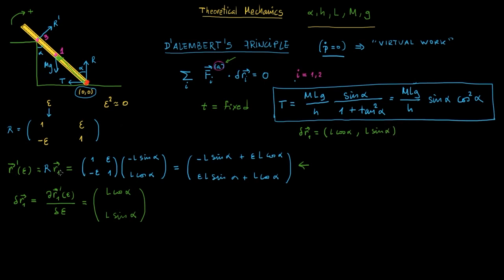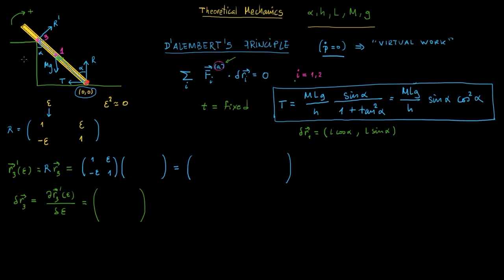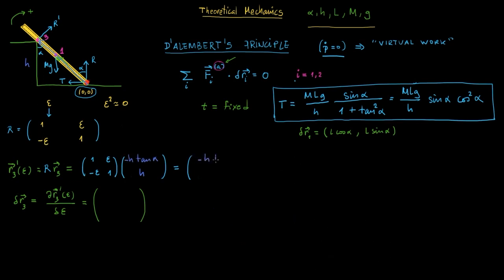Now let's compute point 3. Vector R3: the y-component is h, and since tan(alpha) = x/h, x = h·tan(alpha), pointing to the left, so R3 = (-h·tan(alpha), h). Applying the rotation: R3' = (-h·tan(alpha) + epsilon·h, epsilon·h·tan(alpha) + h). The derivative with respect to epsilon gives delta-R3 = (h, h·tan(alpha)). And the virtual displacement of the center of rotation (point 3 as origin) is zero.